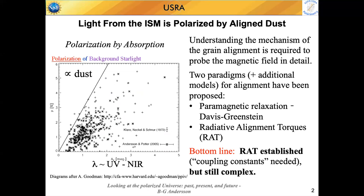There have been two paradigms proposed for why we get grain alignment in the interstellar medium. The long-standing, and still in many cases textbook version, is paramagnetic relaxation alignment — Davis-Greenstein alignment. I will spend a slide on showing why that doesn't work. This is my second minor quibble with Brandon: Davis-Greenstein didn't get it basically right — they got it wrong. Where they did get it right is that the predicted alignment orientation is the same as we observe.